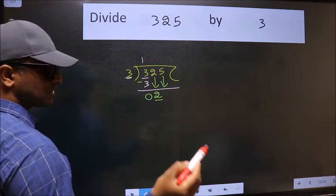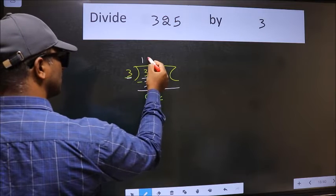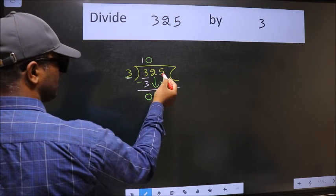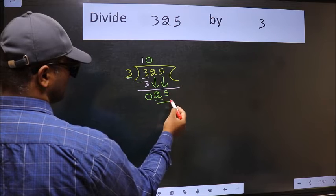And the rule to bring down the second number is we should put 0 here. Then only we can bring down this number. Now 25.